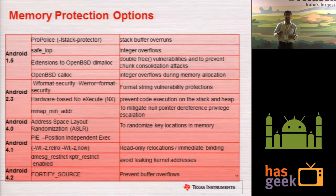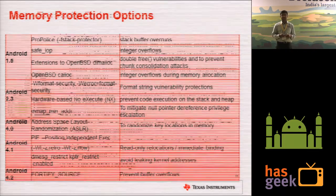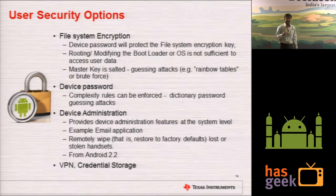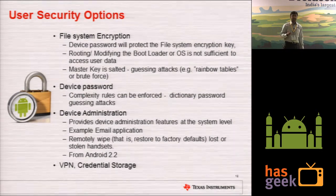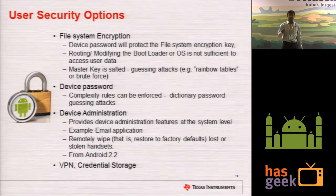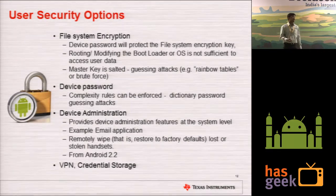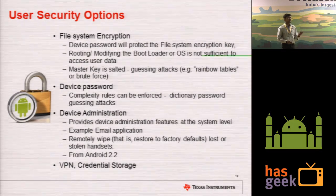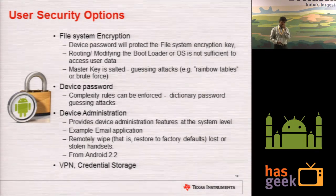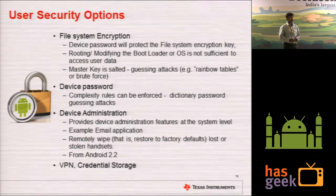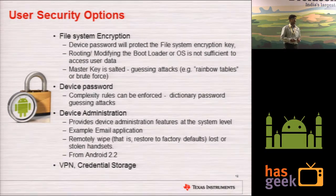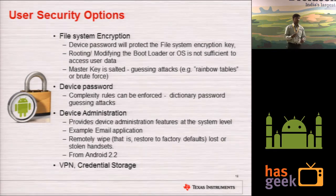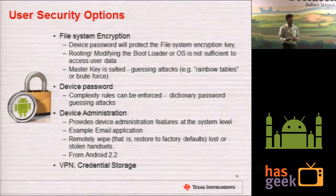From a user's perspective, you can encrypt your file system data — your data partition containing all application data — and there is external storage that you can also encrypt. There is a device password where you can enforce complex security rules. From Android 2.2 onwards, Android provides device administration APIs, and to enhance VPN and certificate storage, Android provides more APIs in later versions.